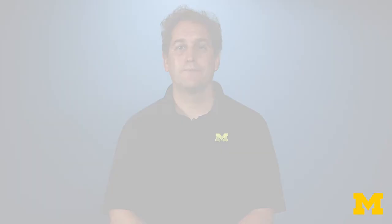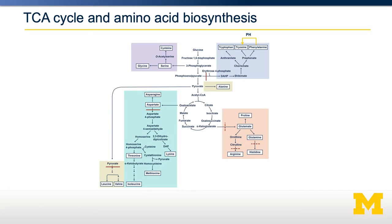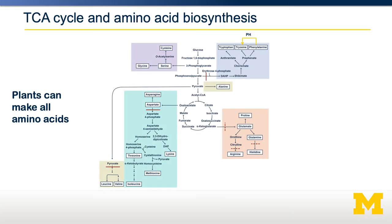Why are certain amino acids essential and others totally dispensable? Shown here is the biosynthesis for all amino acids, for example in a plant. Plants can make all 20 amino acids — they don't have the option of going to the store and buying more leucine because they're running short. They're stuck in the ground and have to make do with what's around them. You can see some of these pathways are quite straightforward, and some are quite complicated.